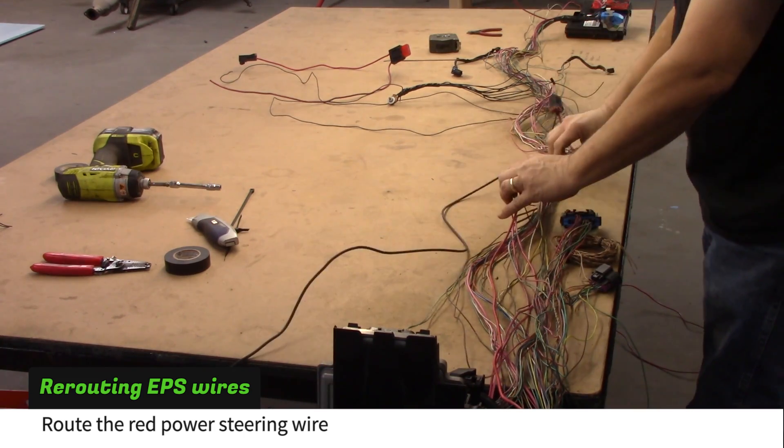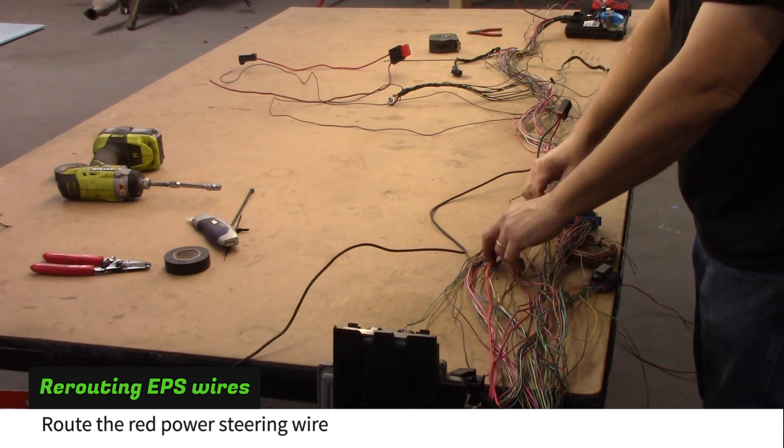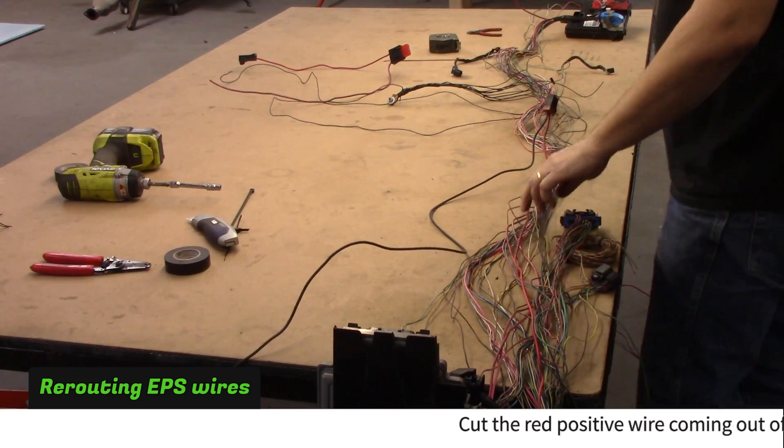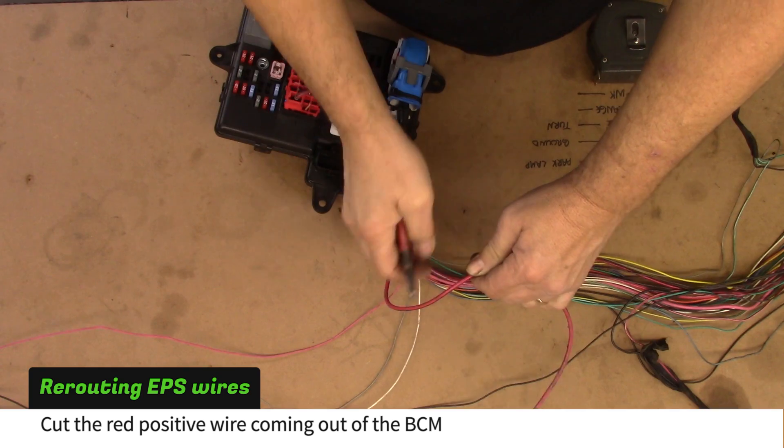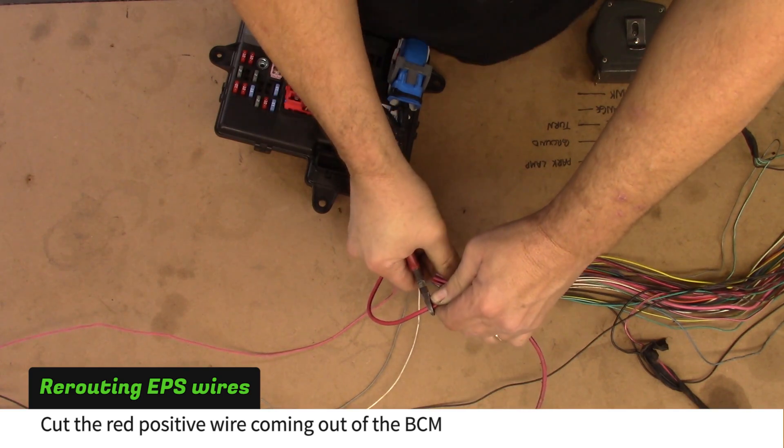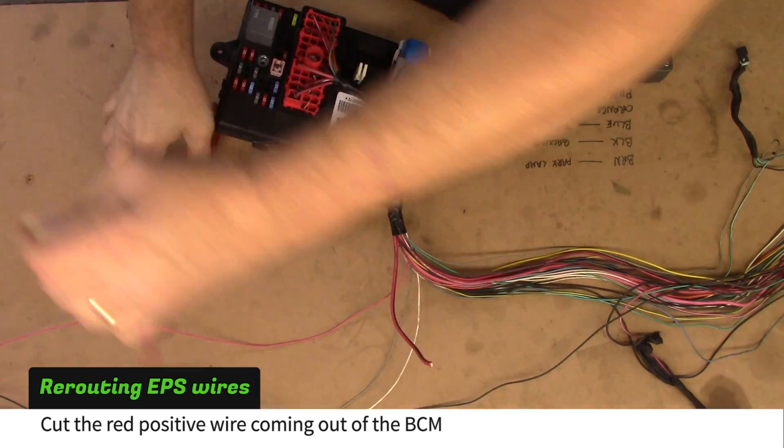Route the power steering wire toward the BCM and cut the red positive wire about one foot from the black plug. Cut the long red wire coming from the BCM. Leave about six inches from the BCM.